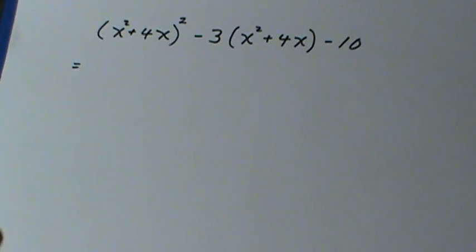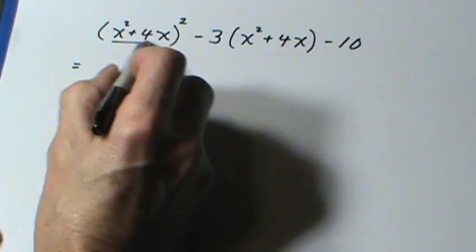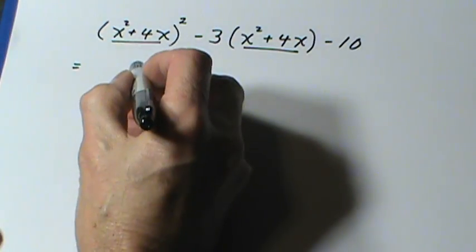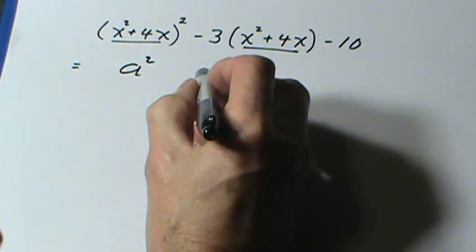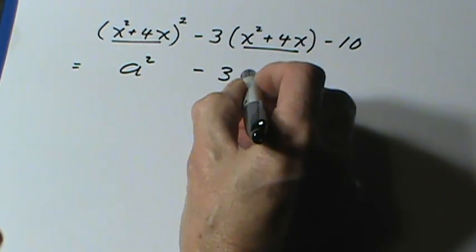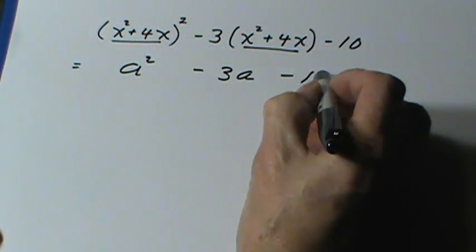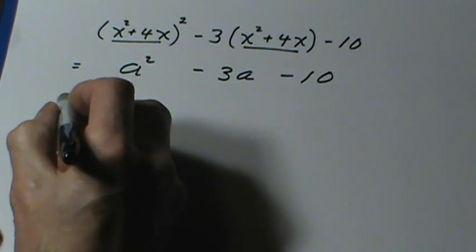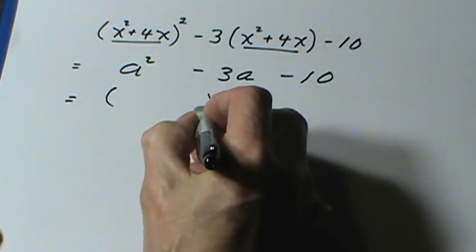A question like this, if you recognize the same thing in both of these brackets, you can let another letter stand for what is in those brackets. For example, I'm putting it a in place of the x squared plus 4x. This I can factor.